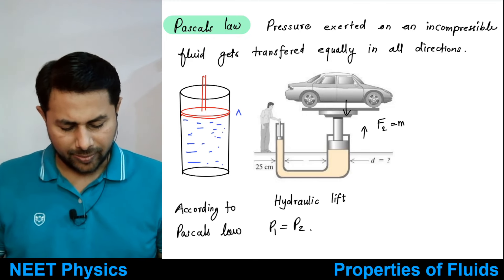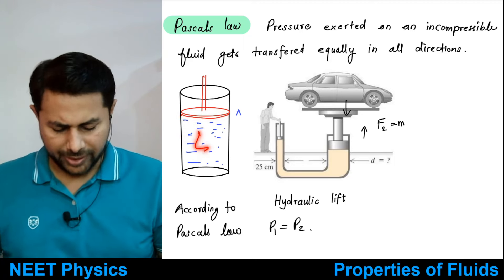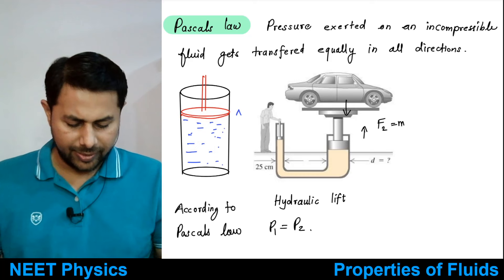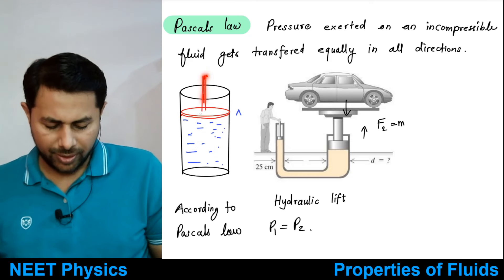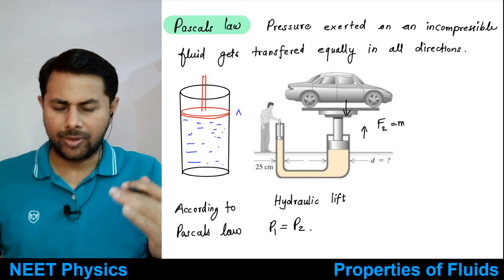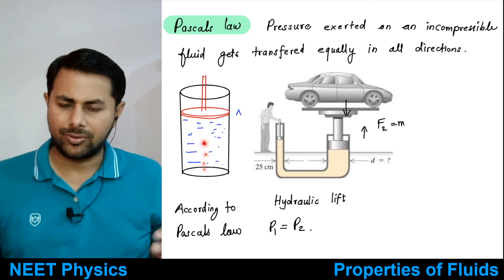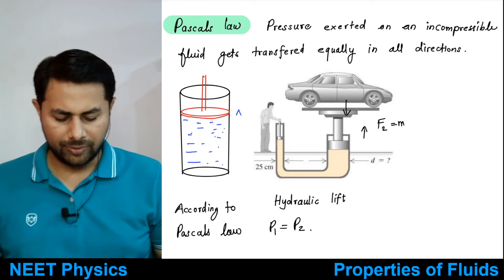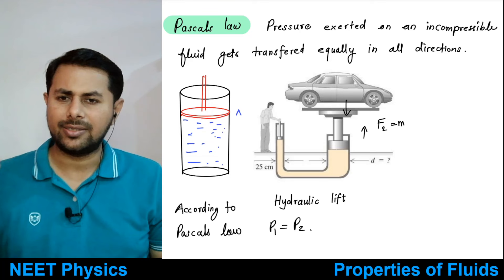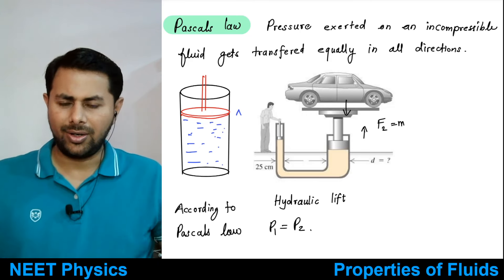Suppose you have fluid contained in a container with an airtight piston, and you push the piston. You are pushing the piston at the top. What happens is the pressure at that point increases by some amount due to the force exerted by you. Pressure at each and every point would be increased by the same amount — whether the point is here or there does not matter. Pressure applied to a fluid gets transmitted equally in all directions.